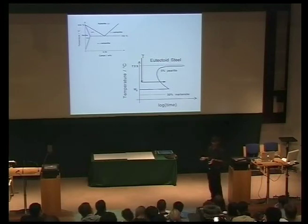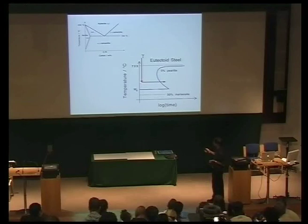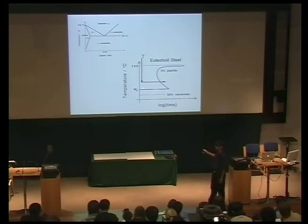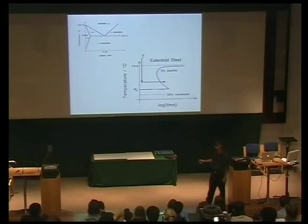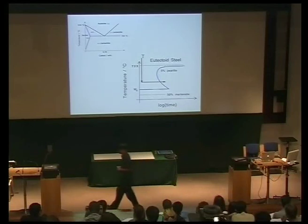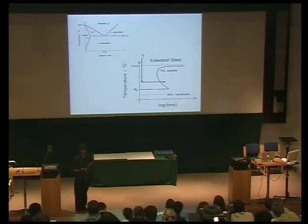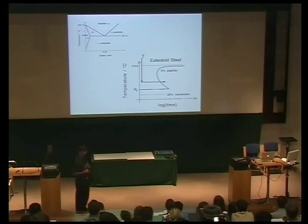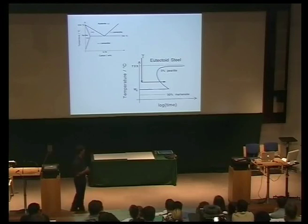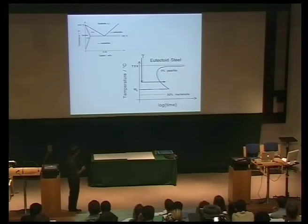The time-temperature transformation diagram for eutectoid steel is very simple. If I take my austenite and cool it to any particular temperature and hold it, I will get pearlite. If I cool it sufficiently rapidly, then I can miss the pearlite and just get martensitic transformation. This horizontal line represents the formation of martensite. I've got to cool the steel fast enough to avoid pearlite in order to get martensitic transformation. If I do something which shifts this curve to longer times, then that steel is said to be more hardenable because you can cool at a slower rate to get martensite. For example, if I add anything which makes austenite more stable than ferrite — such as manganese — that will increase the hardenability of the steel and this curve would move to the right.